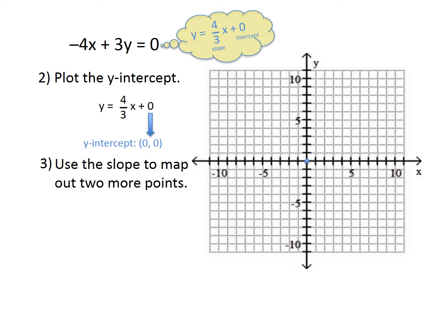The next thing we're going to do is use that slope to map out two more points. Let's look at the slope-intercept form again and take the slope off: 4 over 3, both positive numbers. Starting at (0, 0) on the graph, we're going to go up 4 and over 3 to place another point.